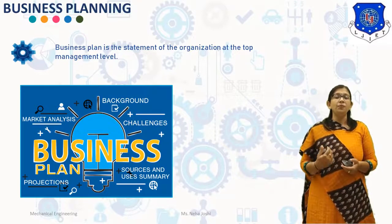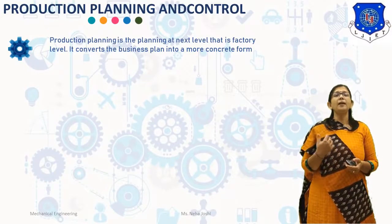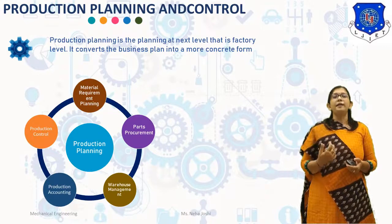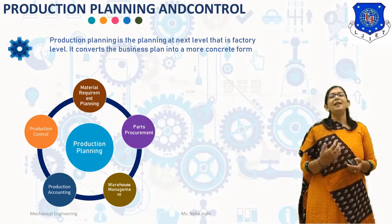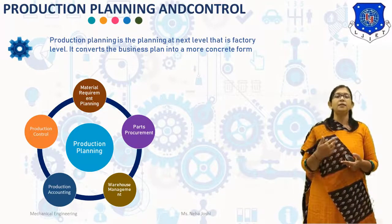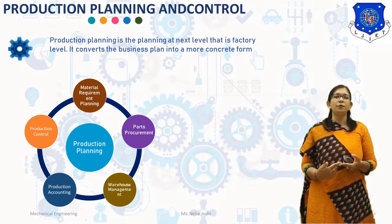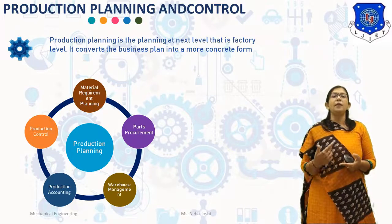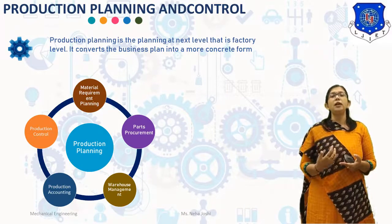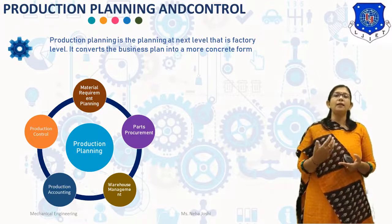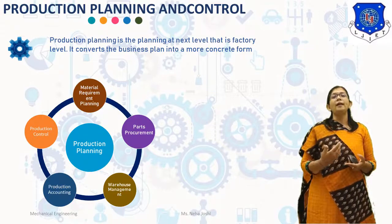Now, what is Production Planning and Control? Production Planning and Control is the next level, that is Factory Level. It converts the business planning into a more concrete form. The Production Planning and Control deals with forecasting of sales, detailing of the variety of product, quantity and time of manufacturing, procurement of raw material, planning of manpower, machines and other resources, planning of manufacturing, scheduling and dispatch. The planning of production activities and control of factory resources must go hand in hand.